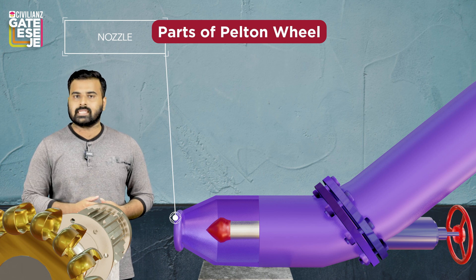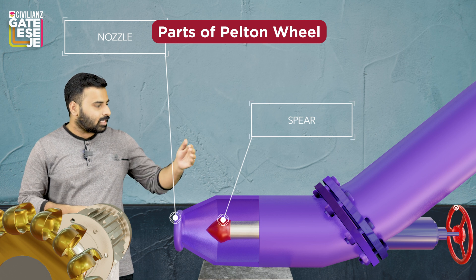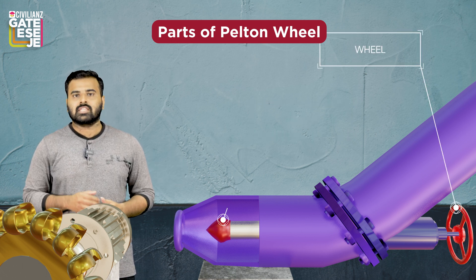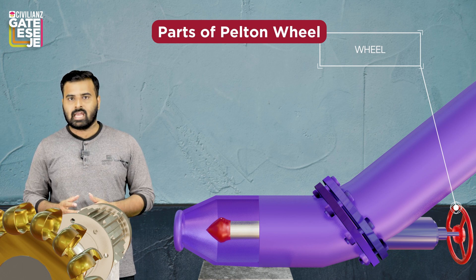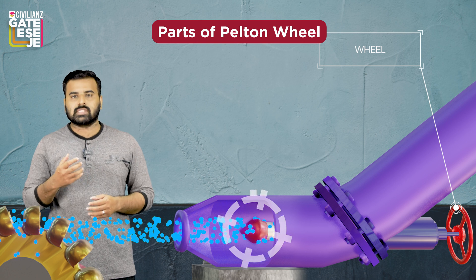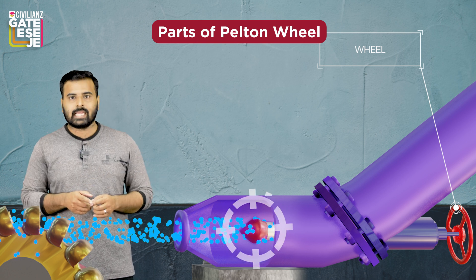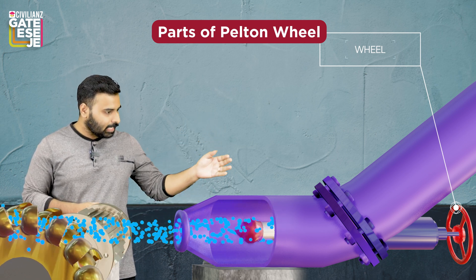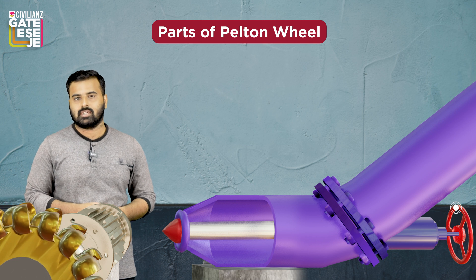The second important part is the nozzle. Its main function is to ensure that the total energy at the inlet of the Pelton wheel contains only kinetic energy. The next part is the spear and the wheel. The main function of the spear is to regulate the flow properly through the nozzle — as the spear moves to and fro through the nozzle, the flow is controlled. The to-and-fro movement of the spear is controlled by the wheel.